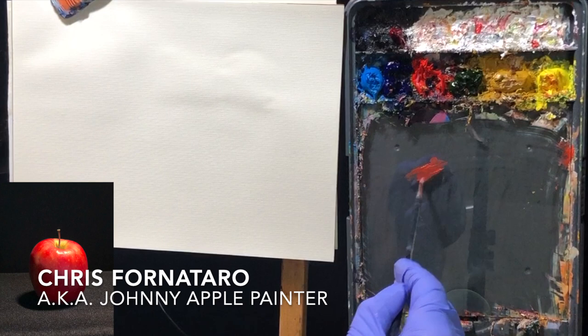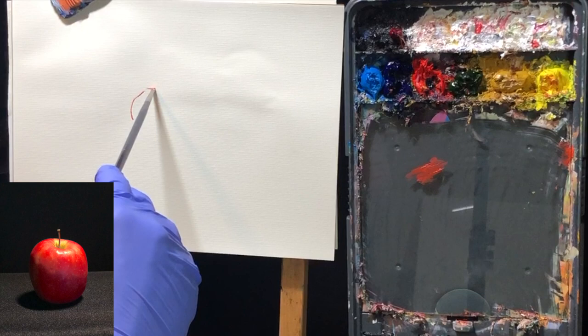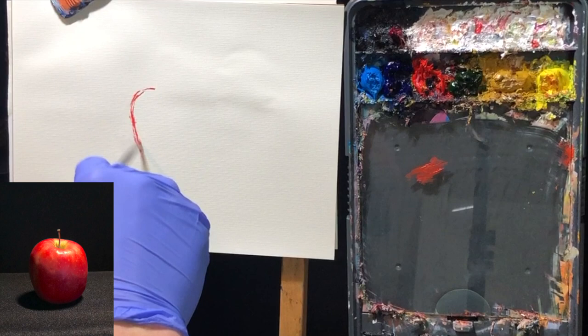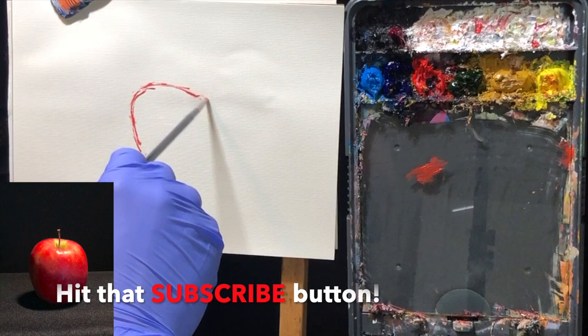All right, so I've got a canvas pad here, I got my colors. I got all my colors listed in the description below if you want to see all of those. And what I'm doing here, I'm just using a number zero ivory flat to draw in just the basic outline shape of the apple.